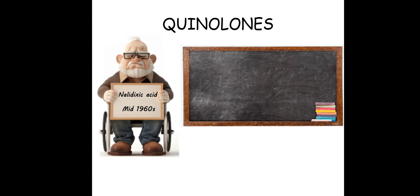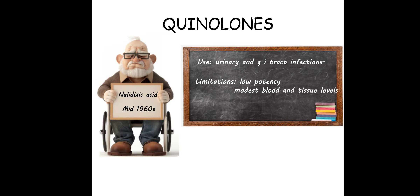The very first member of the quinolones was nalidixic acid, which was introduced in the mid-1960s and was basically used just for urinary and GI tract infections. Its use was restricted because of limitations like low potency, modest blood and tissue levels, restricted spectrum, and higher frequency of bacterial resistance.